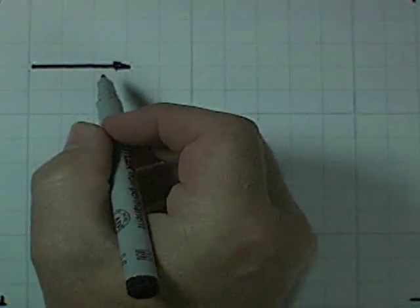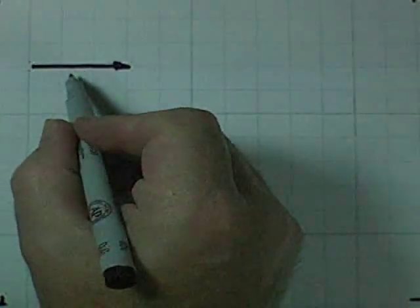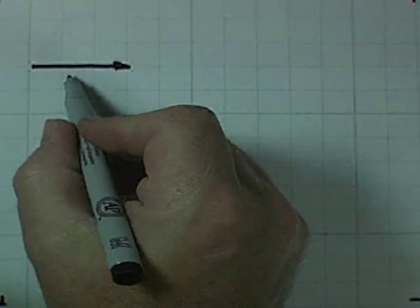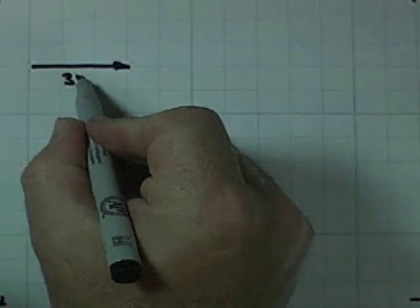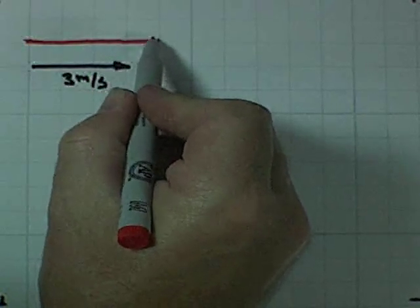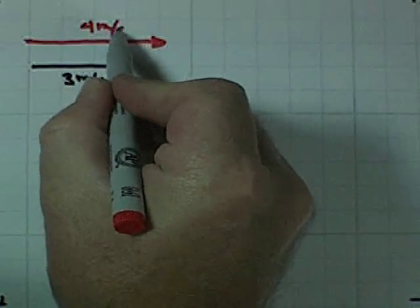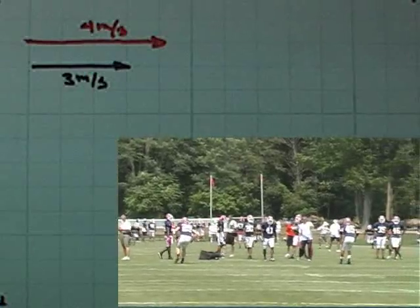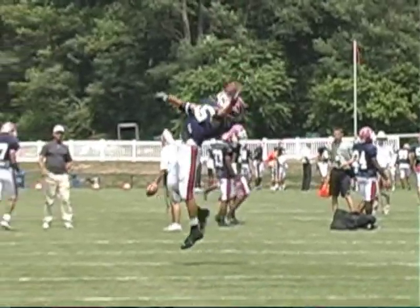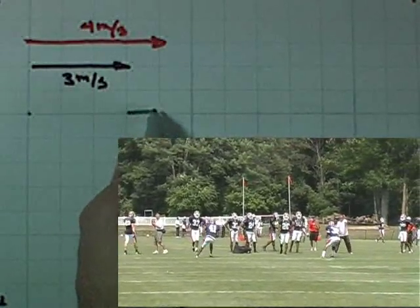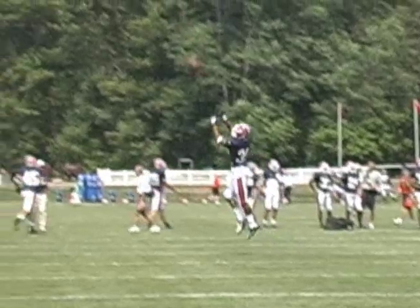In this first situation, they're doing interception drills. The guy's running downfield backwards because he's supposedly following some receiver from the opposing team. Let's say he's traveling at three meters per second. The football is tossed — let's assign a value of four meters per second. So the relative velocity between the two of them would be one meter per second. The football is coming along at an easy one meter per second of relative velocity, and he can reach up and grab the football.